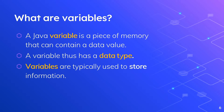First question: what are variables? A Java variable is a piece of memory that can contain a data value. It is like a container where we can save or store data and information — that is what 'can contain a data value' means. And thus, it has a data type. What is a data type? It is basically the format of our information or data.